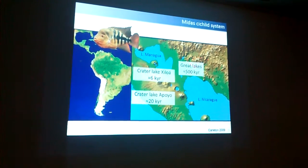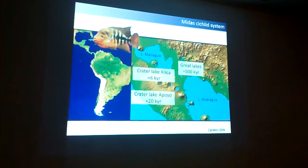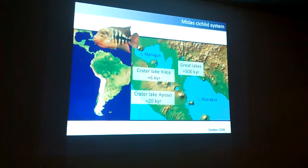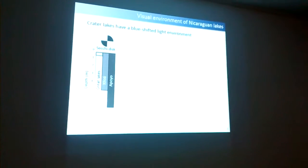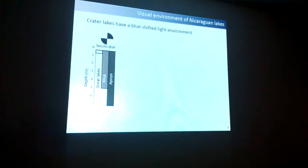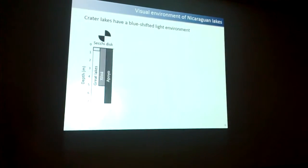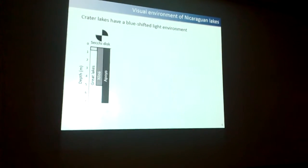Today I will compare the visual system from these great lakes — the source population — with the crater lakes. The reason I expect changes is because the visual environments of the crater lakes and the great lakes are completely different. The first obvious thing is that crater lakes have very clear water while the ancestral lakes are very turbid.